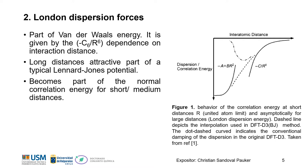At long distances, they are the attractive part of a typical Lennard-Jones potential. But at smaller or short-medium distances, it becomes part of the normal correlation energy, as we can see here. This is the part of the London dispersion, and this becomes part of the dispersion correlation energy.